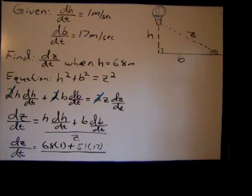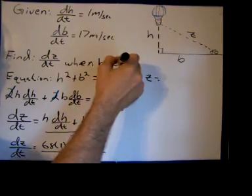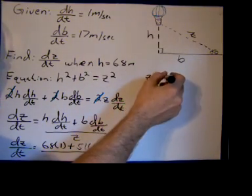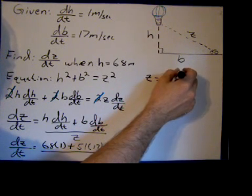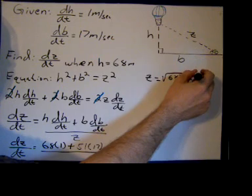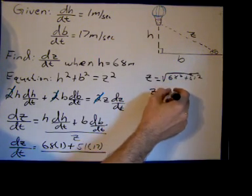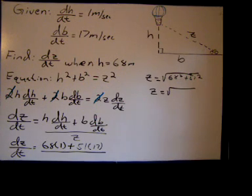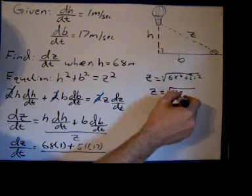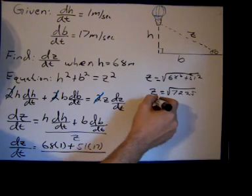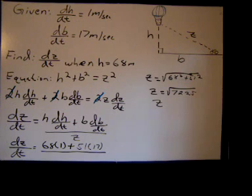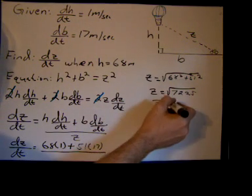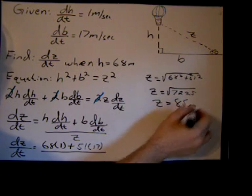And we'll divide that by Z, and Z is the square root when H equals 68. It's going to be the square root of 68 squared plus 51 squared. So Z equals the square root of, I worked it out earlier, but 68 squared plus 51 squared equals 7225. And that's a perfect square. Aren't these numbers nice? So Z equals 85 meters.